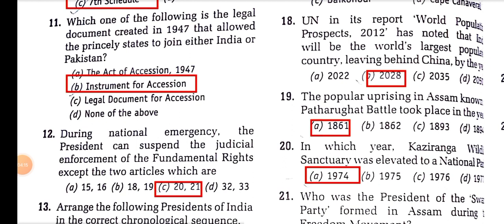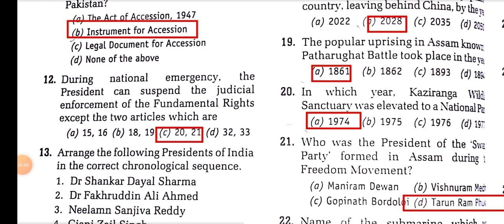In which year was Kaziranga Wildlife Sanctuary elevated to a national park? The official APSC answer key gives 1974, but when reading the official document it states 1968. In my national park video I mentioned 1968, so please make a note of that discrepancy and do watch that video as it covers more from this paper.